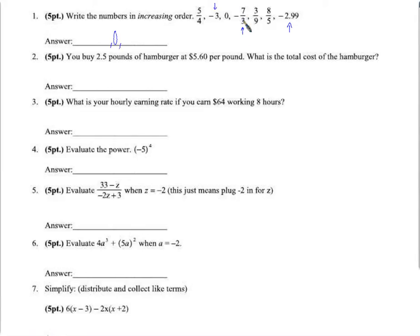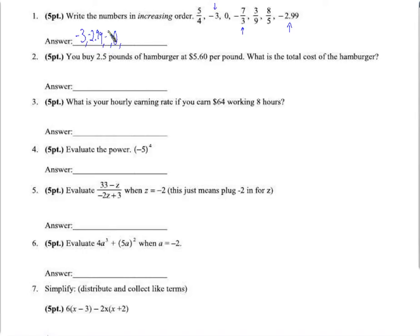If we take 7 divided by 3, we get 2 and 1 third. So the question is which one is furthest to the left. Well, 2 and 1 third is certainly not going to be as far left as negative 3. So we go negative 3 first. Then, since 0.99 is farther from 0 than 1 third, we go negative 2.99 and then negative 7 thirds.